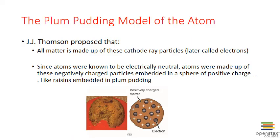Based on his discoveries, J.J. Thompson proposed that all matter is made up of these cathode ray particles, which were later called electrons. He could get the same particles from any type of electrode — the type of element involved didn't matter. Furthermore, since atoms were known to be electrically neutral, they must have been made up of these negatively charged particles embedded in a sphere of positive charge, like raisins embedded in plum pudding. This is why J.J. Thompson's model of the atom was known as the plum pudding model.